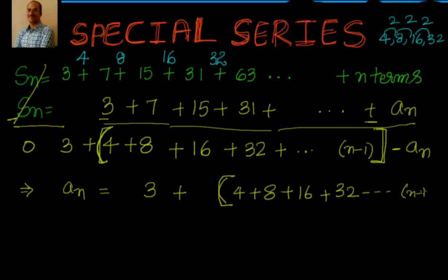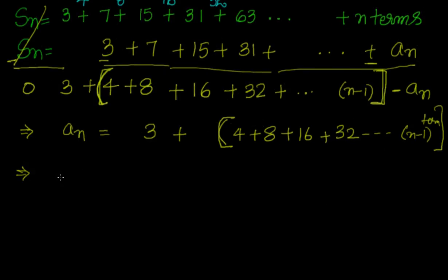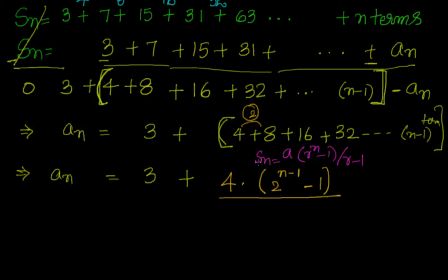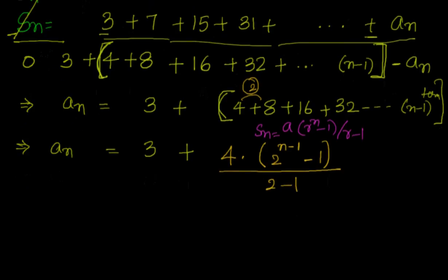We have n minus 1 terms in the geometric progression because the first term (3) is not part of it. So aₙ equals 3 plus the sum of the geometric series 4 + 8 + 16 + ... up to (n−1) terms. Using the formula S = a(rⁿ − 1)/(r − 1), with a = 4 and r = 2, we get 4·(2ⁿ⁻¹ − 1)/(2 − 1).